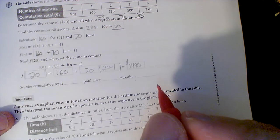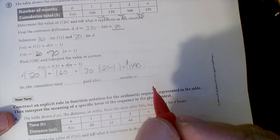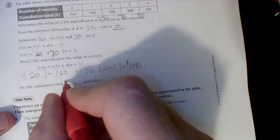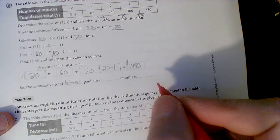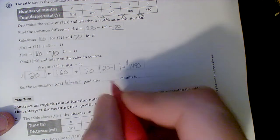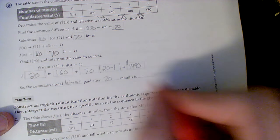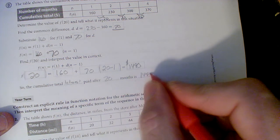Alright? So the cumulative total interest paid after how many months? 20 months is 1,490. There it is. Let's do one more.